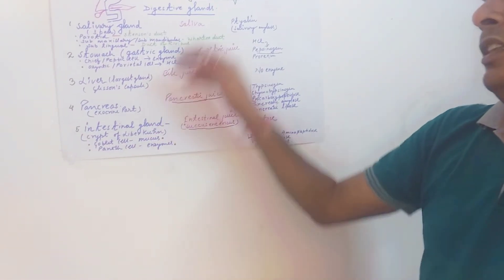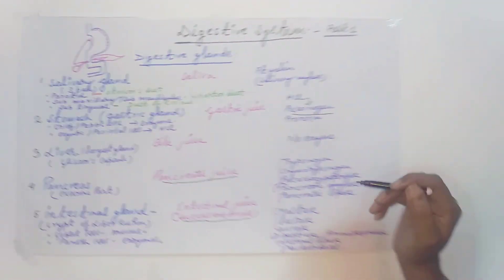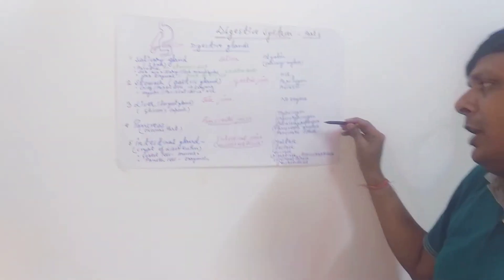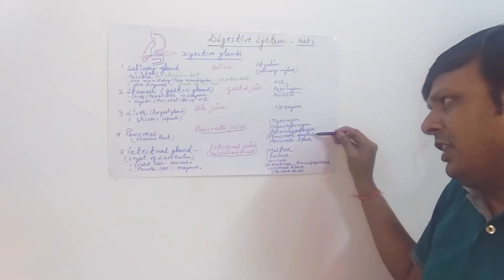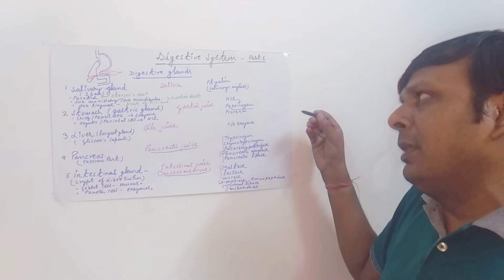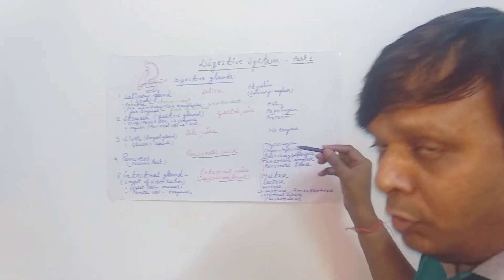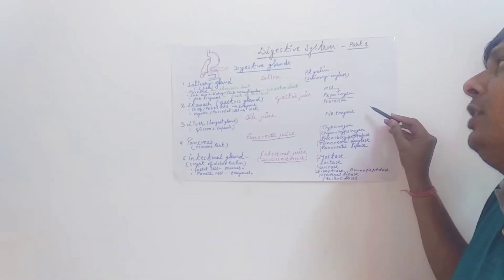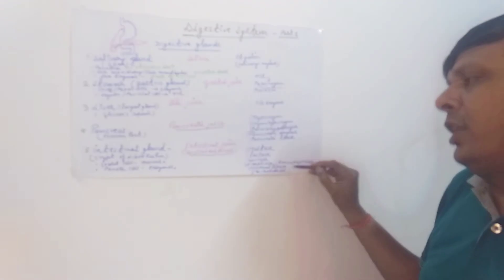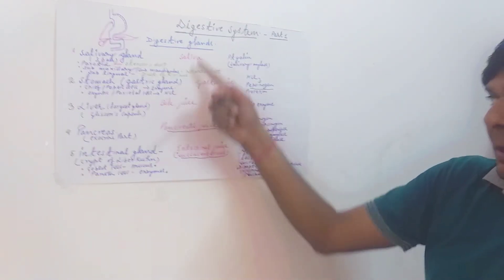To summarize: salivary amylase helps in carbohydrate digestion; pancreatic amylase also helps in carbohydrate digestion (mainly starch); maltase, lactase, and sucrase help in digestion of disaccharides. The final products of digestion are simple units — carbohydrates (starches) are converted to glucose, proteins are converted to amino acids by the action of pepsin, trypsin, and chymotrypsin, and fats are converted into fatty acids by pancreatic or intestinal lipase.